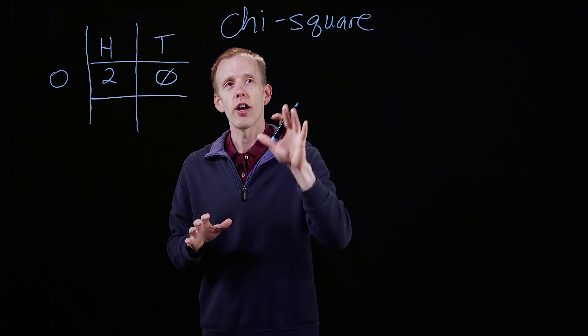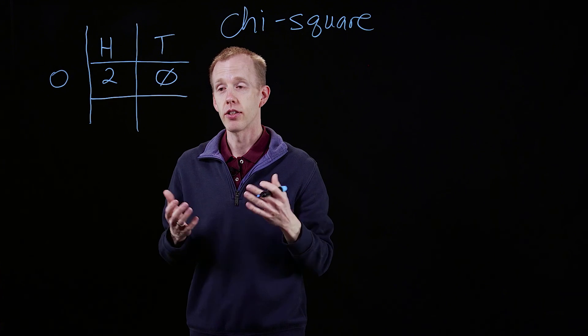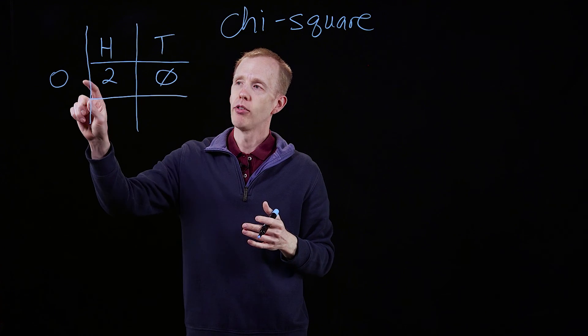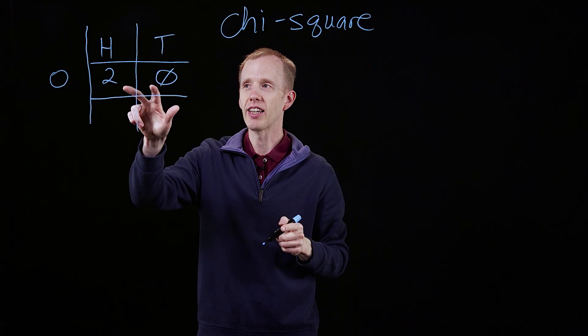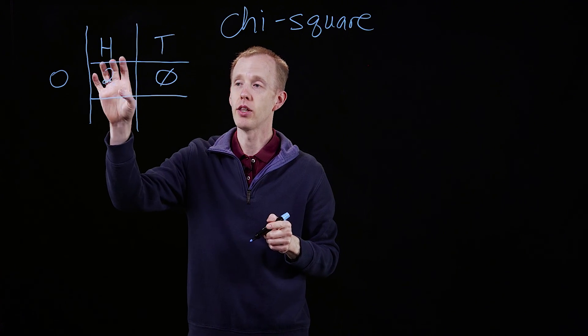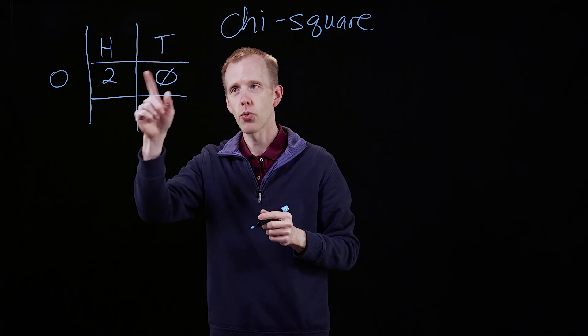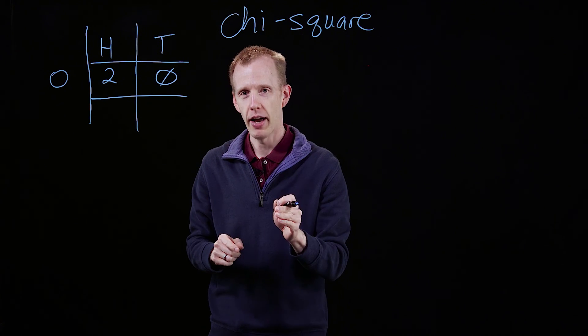So what we have now is the start of an analysis that's of the chi-square type. We have an observation, and we want to know, the question is, is there a significant difference between the observed values, we see heads twice and tails never, and what we expect.